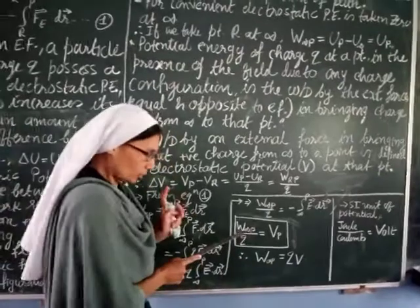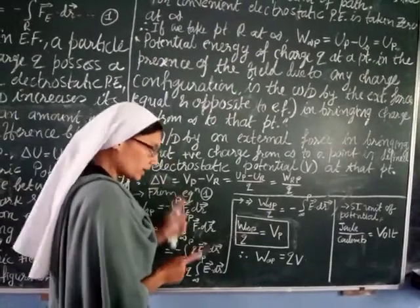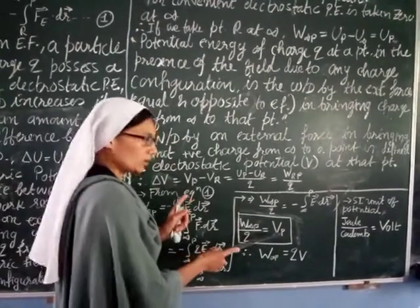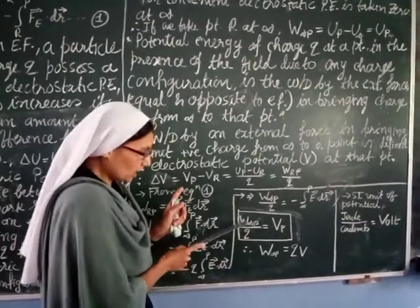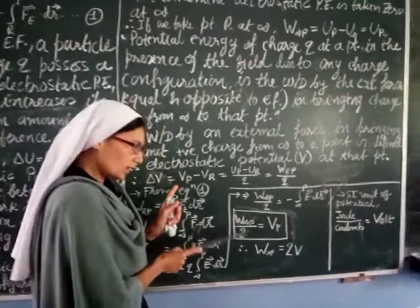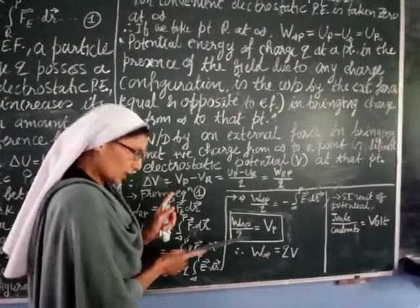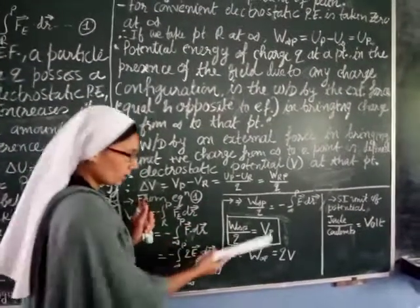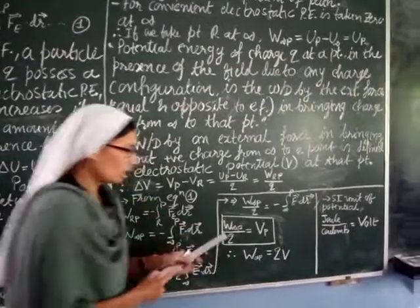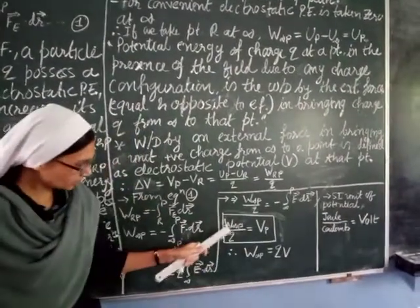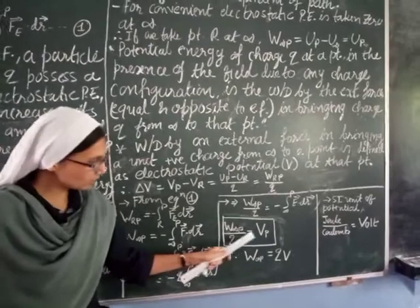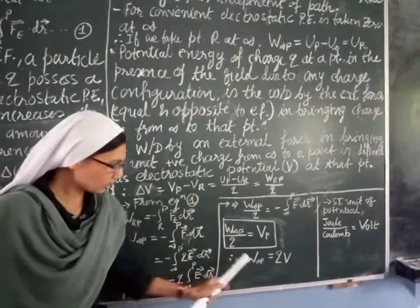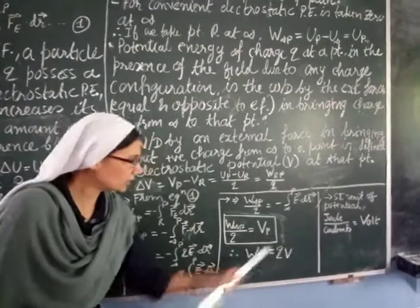So this is one formula to remember: W/Q = V. Work done divided by the charge is equal to the potential. This is also another form from the earlier expression.